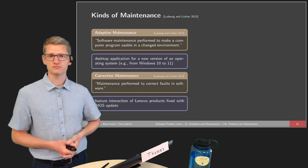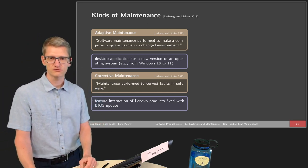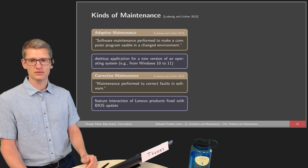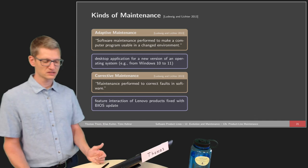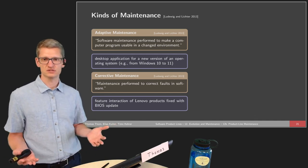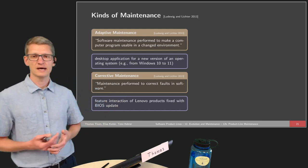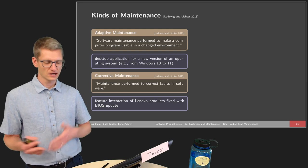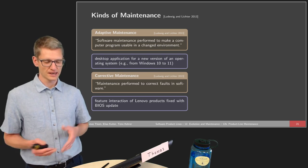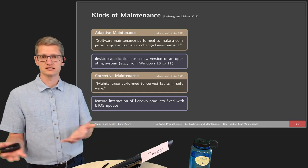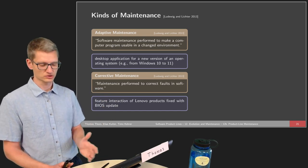We have some distinction of different kinds of maintenance activities. First, adaptive maintenance: software maintenance performed to make a computer program usable in a changed environment. For example, if we have a product line of desktop applications — say a chat client or database — running on Windows 10, and we switch to Windows 11, we need to make it work on the new operating system. Some things may need to change for appearance or actual functionality.